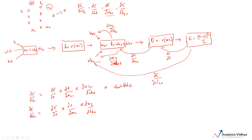Let's start with the first quantity: ∂E/∂O. We know that E equals (Y minus O) squared divided by 2. When we differentiate E with respect to O, using the power rule the 2s cancel, so ∂E/∂O is simply Y minus O — the difference between the actual and the predicted value.